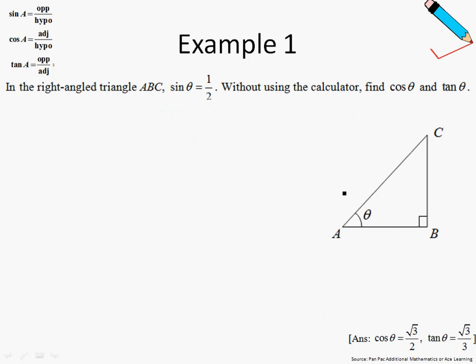In the right-angled triangle ABC, sine of theta is half. Recall that sine of theta is opposite over hypotenuse. So if sine of theta is half, then my opposite, which is BC, should be 1, and my hypotenuse, which is AC, should be 2. And using Pythagoras theorem, I can work out AB to be the root of 3.